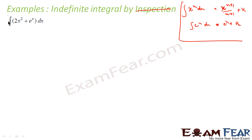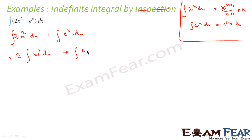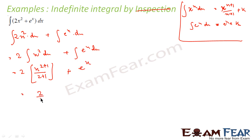So we will use some formulas. I can write this as the integral of 2x² dx plus the integral of eˣ dx. Taking the constant 2 out: 2 times the integral of x² dx plus the integral of eˣ dx. Using the formula xⁿ → xⁿ⁺¹/(n+1), this becomes 2/3 x³ plus eˣ plus some constant.